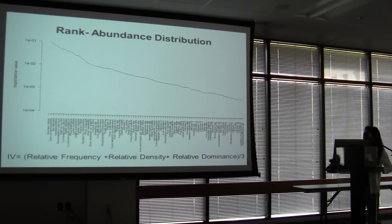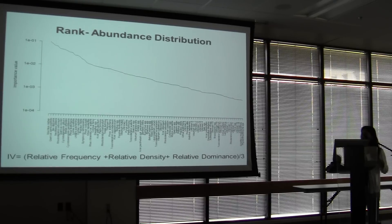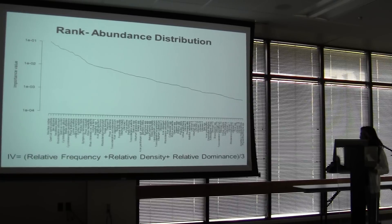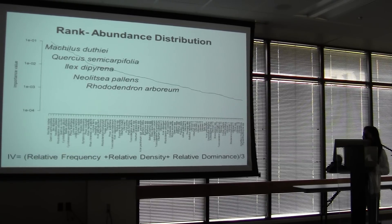This shows how species were distributed in the landscape and in forest patches based on frequency, density, and relative dominance. This is the importance value calculation, and these are the five species with the highest importance values.